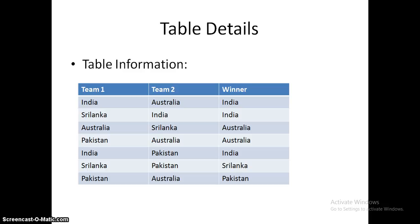These are the table details for our question. I am taking team1, team2, and winner as three columns and I have populated seven records. In team1: India, Sri Lanka, Australia, Pakistan, India, Sri Lanka, Pakistan. These are the matches played. Team1 played against team2 — India versus Australia and the winner is India. Similarly, Sri Lanka versus India and the winner is India. I have added seven records, seven matches of a team and the respective winners of each match.